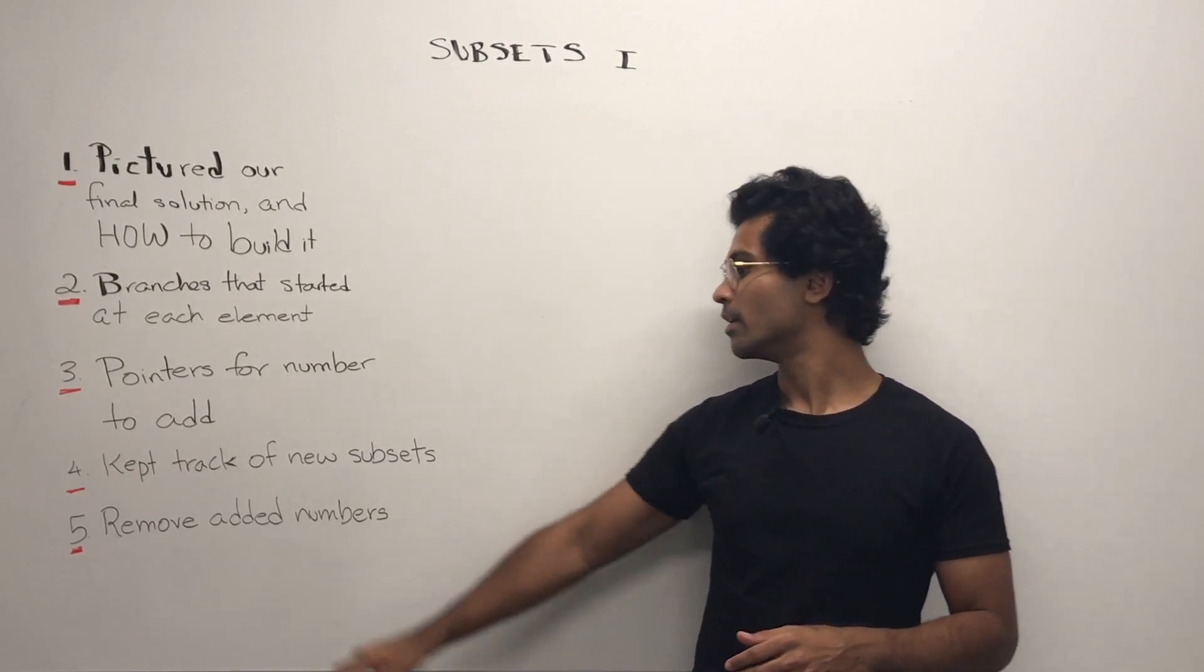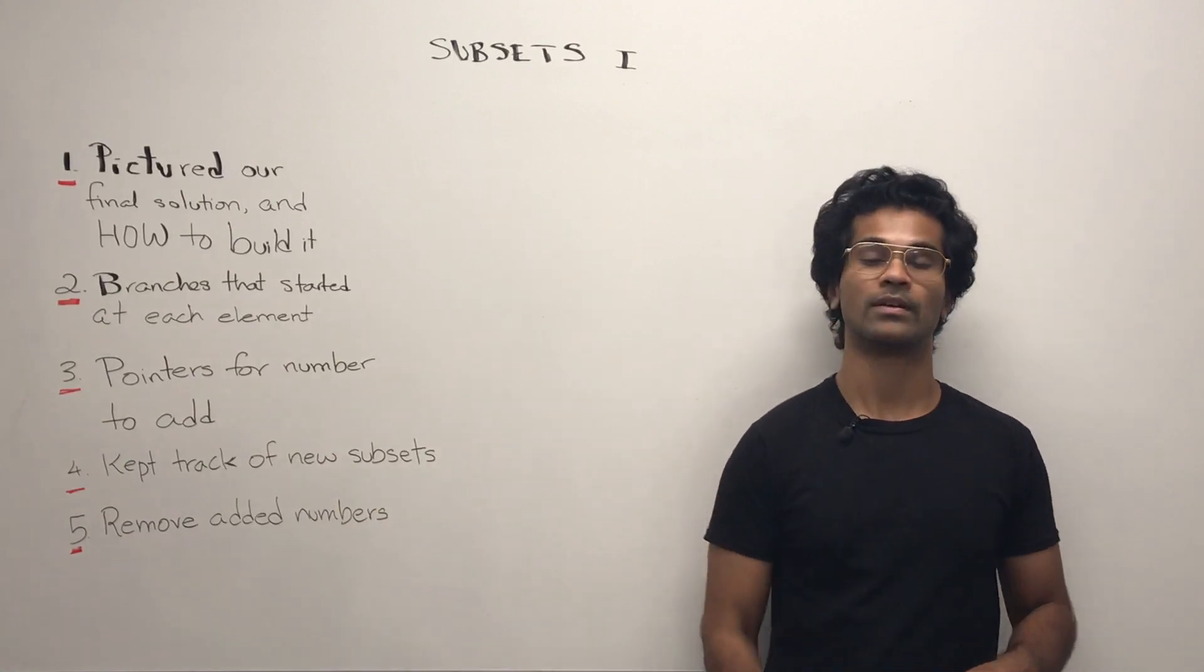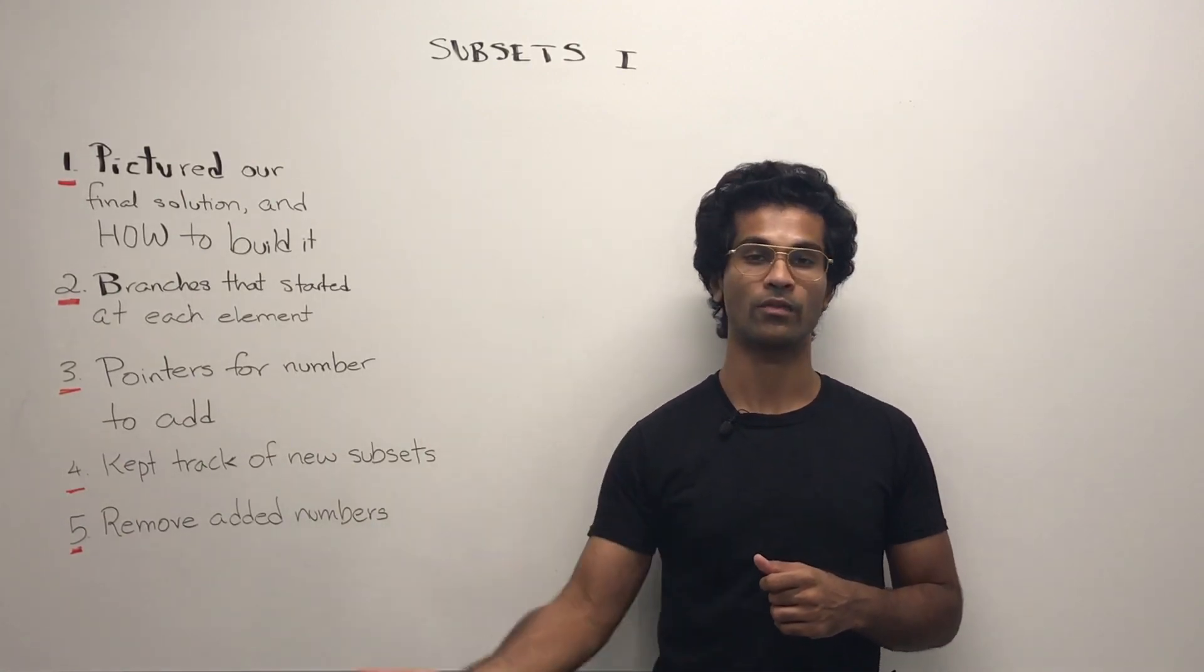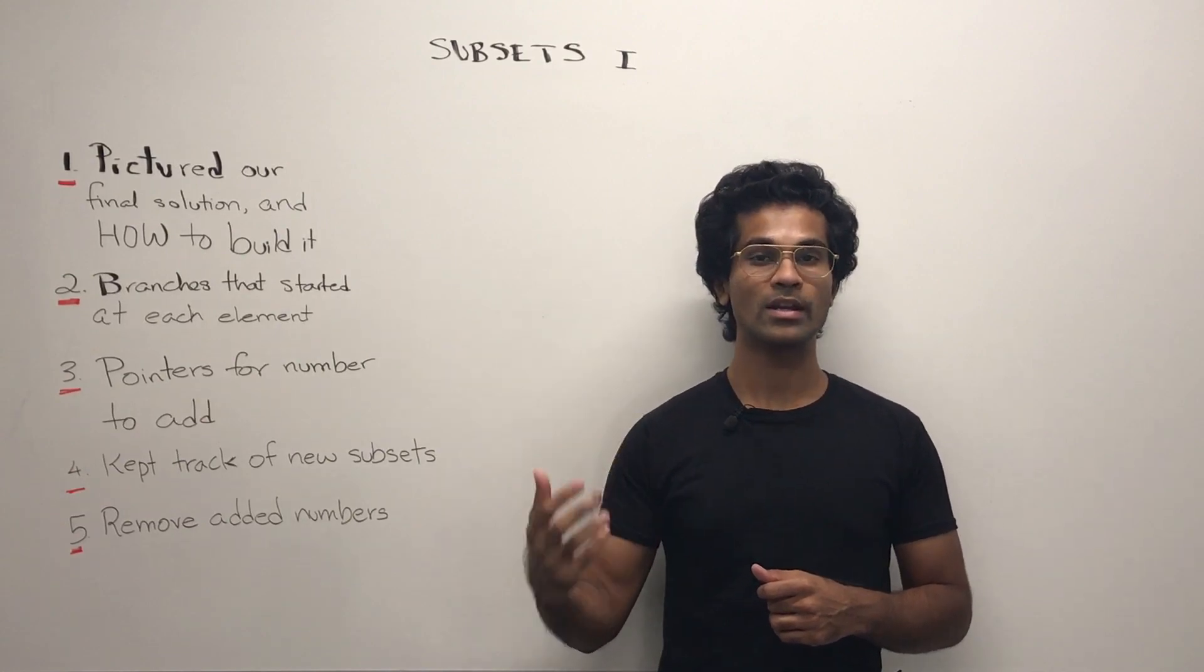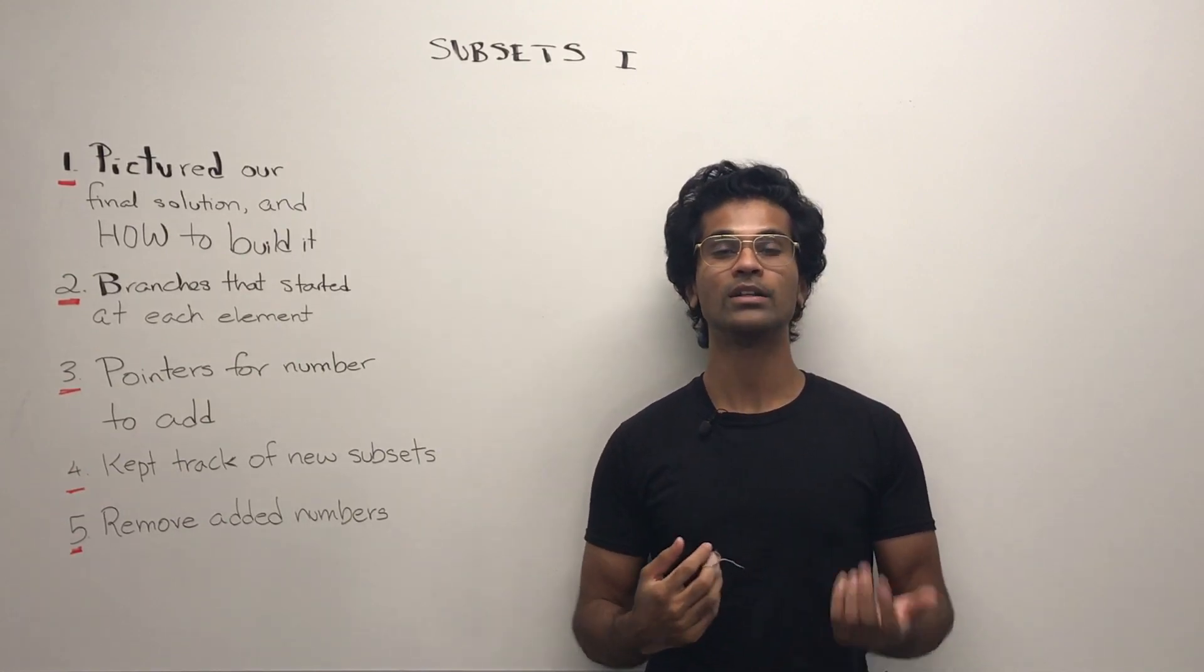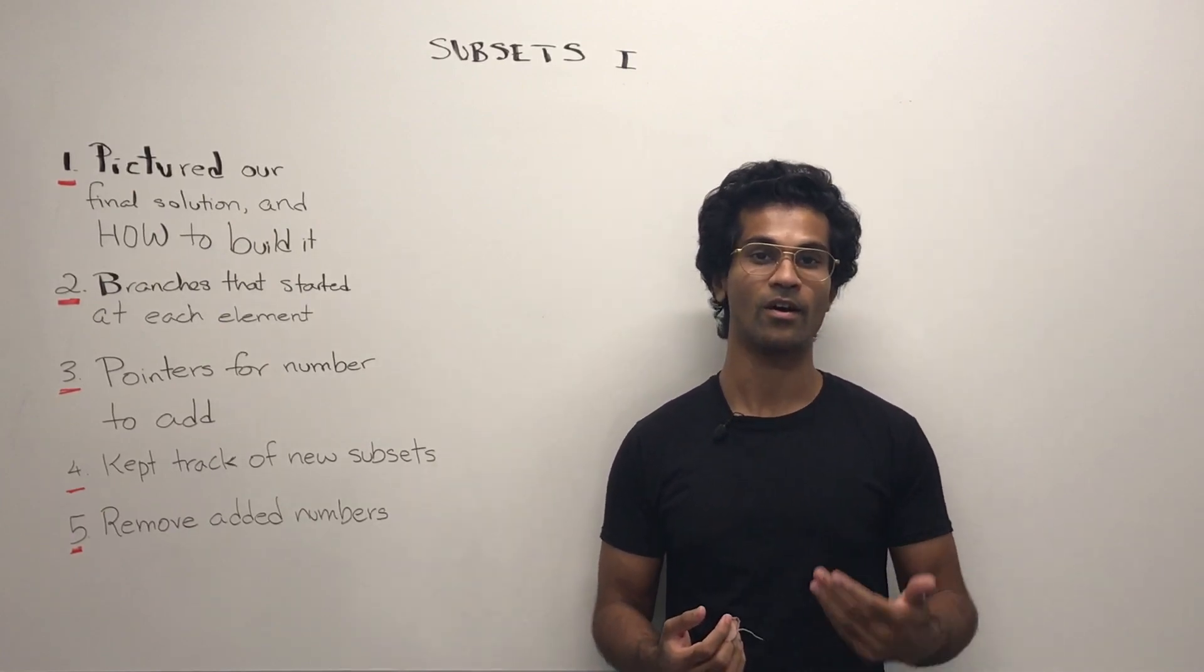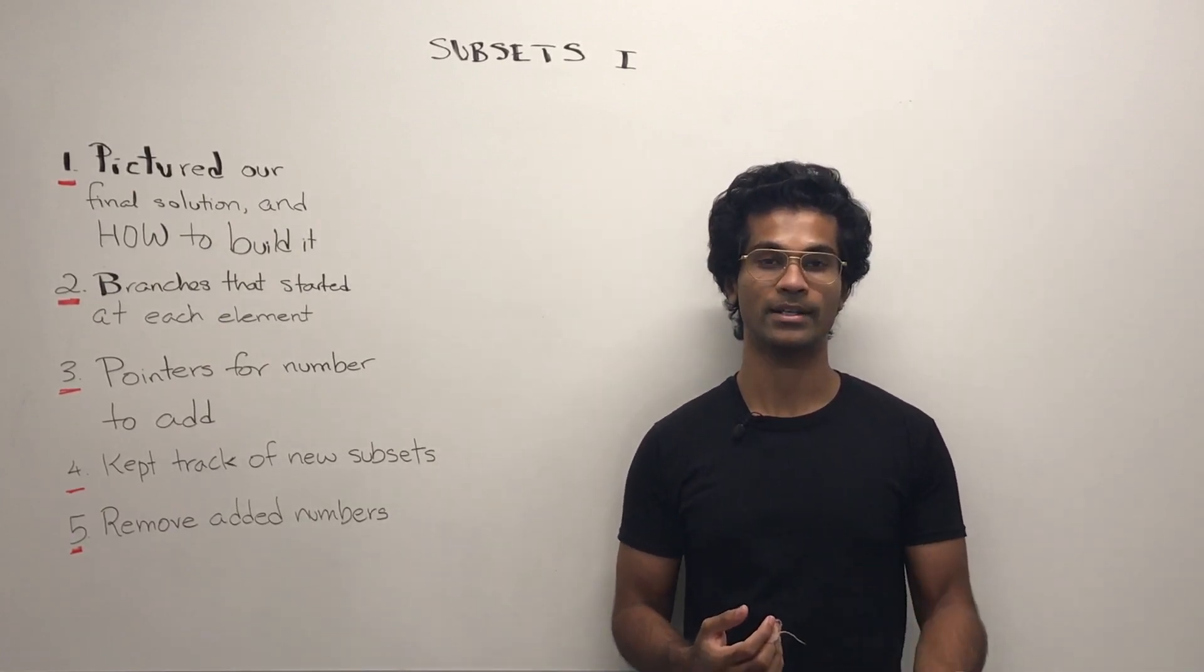And finally, we removed added numbers. So every time we added a number and recursively called our function, we waited until that return and we undid the number that we added. And we pretty much removed it from the end of the list that we just added it to.